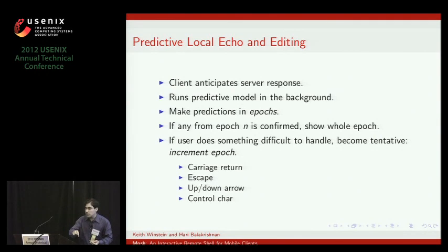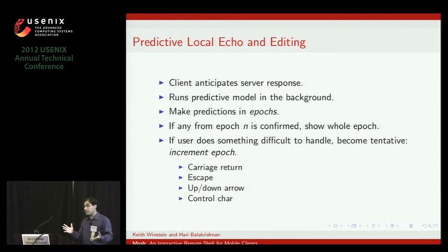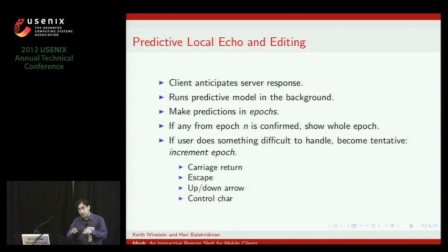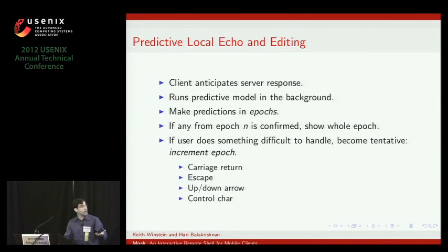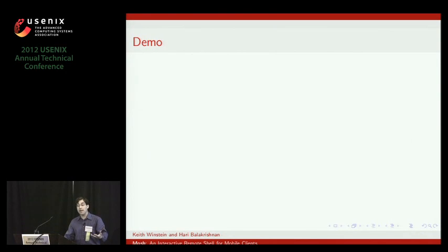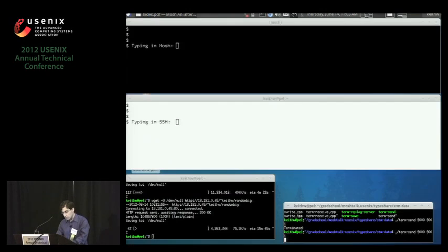Like in VI, you hit I to insert — that I never appears on the screen. So we try and make these predictions in groups we call epics. The hypothesis is that any epic is either entirely echoed or not echoed. So we start predicting just in the background. If any prediction within an epic gets confirmed, then we show the whole epic. And if we make a mistake, no big deal — we just take away the epic. And if the user does something that we don't know how to handle, like hits the enter key or up and down, we're not sure what's going to happen, so we just increment the epic. So we keep predicting, but it's in the background. This turns out to work pretty well.